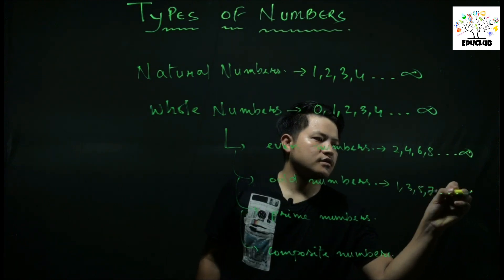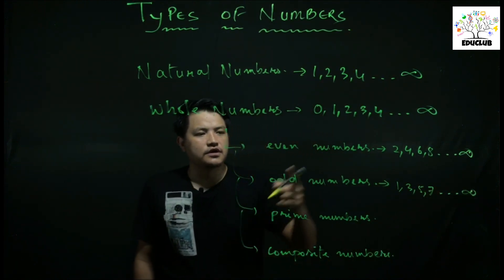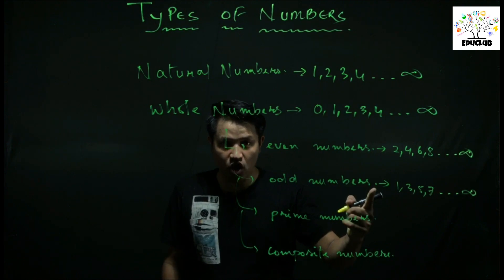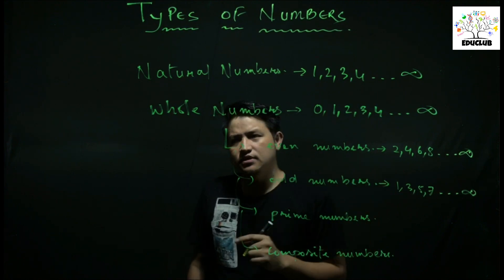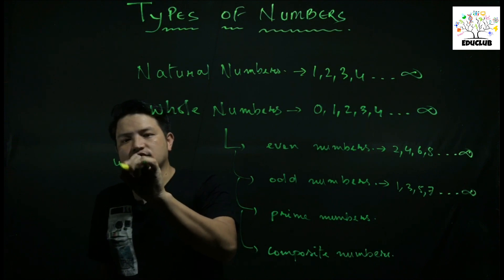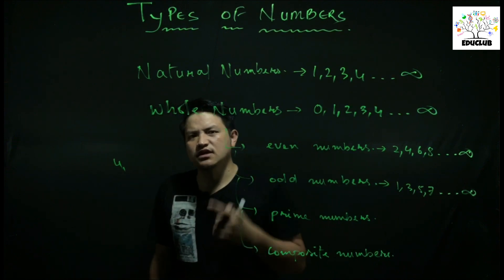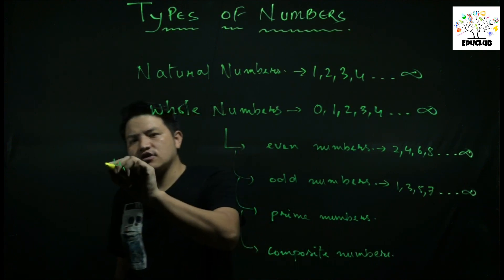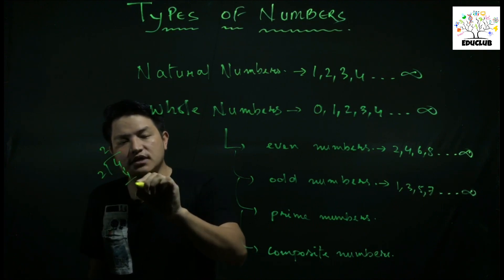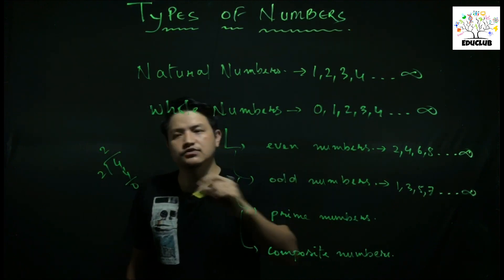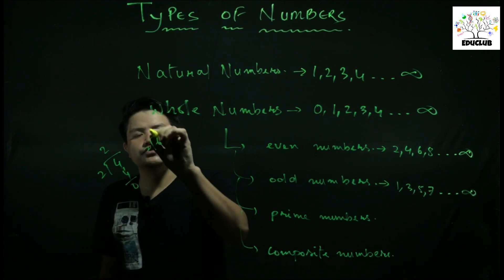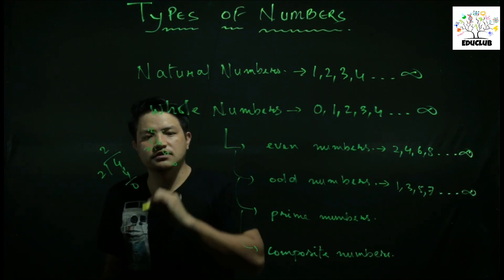Numbers that are divisible by 2 are even numbers. For example, if you have 4: 4 divided by 2 equals 2, remainder 0. Similarly, 6 divided by 2: 2 times 3 equals 6, remainder 0. These numbers have a remainder of 0, so they are even numbers.